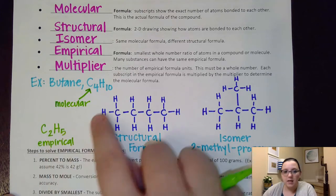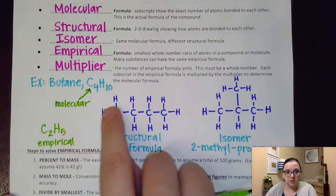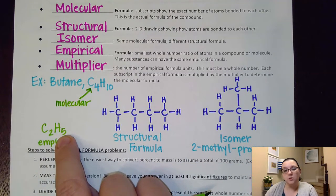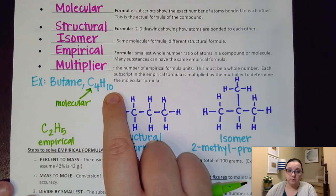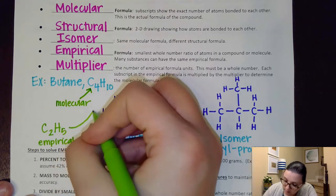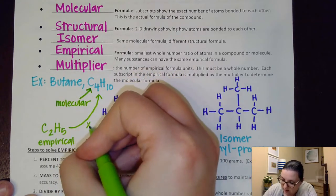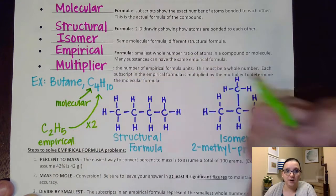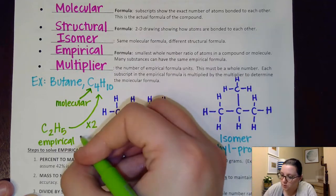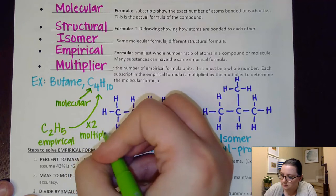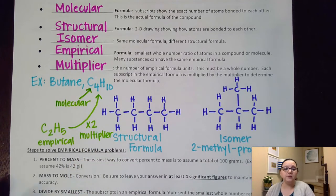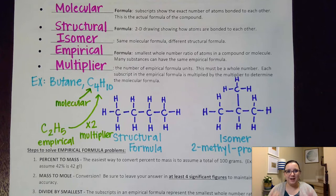There is a connection between these two. Obviously, because this is the same ratio, if I multiply this formula by a set number, I could obtain this actual formula. Here, if I doubled everything, I could get to that original formula. That times two is what we refer to as the multiplier. Now, the multiplier is one of the things that we're going to be looking at how to solve here in a minute.